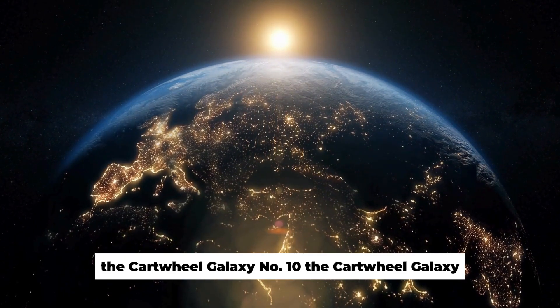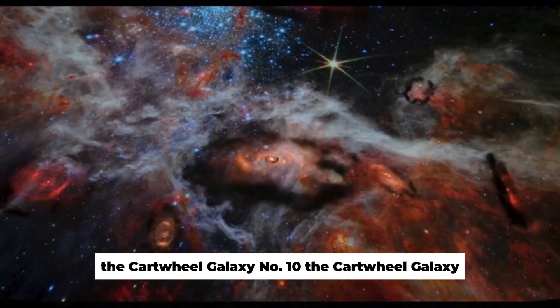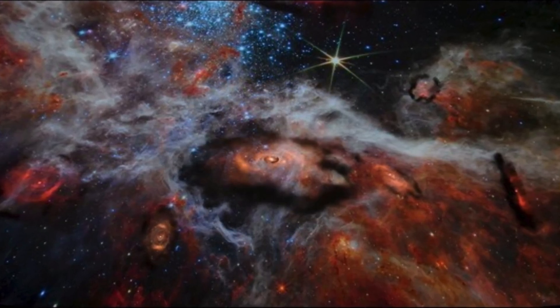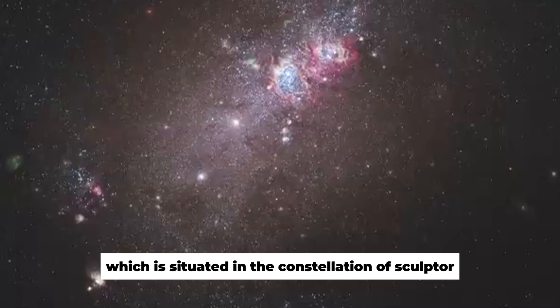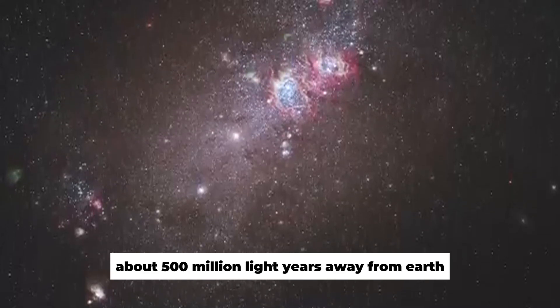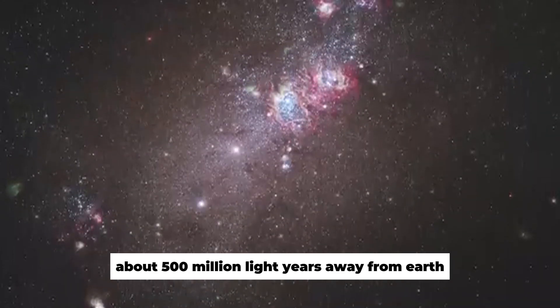Number 10: The Cartwheel Galaxy. This image features the Cartwheel Galaxy, which is situated in the constellation of Sculptor, about 500 million light-years away from Earth. A fascinating fact about this galaxy is that it has been named after the cartwheel shape that it possesses.